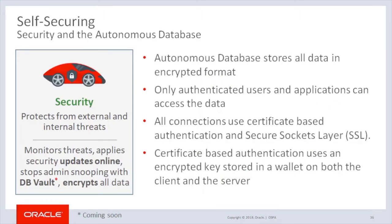Autonomous Database stores all data in encrypted format in the Oracle database. Only authenticated users and applications can access the data when they connect to the database. All connections to the Autonomous Database use certificate-based authentication and Secure Socket Layer (SSL). This ensures that there is no unauthorized access to the Autonomous Database, and that communications between the client and server are fully encrypted and cannot be intercepted or altered.